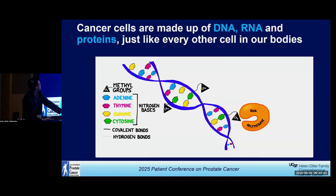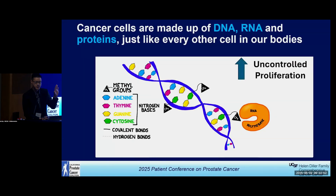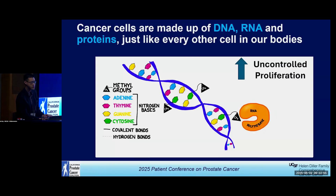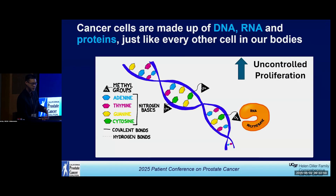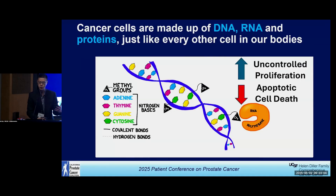You can see the full names in the left panel. There are two key hallmarks that make prostate cancer — any cancer — actually a cancer. Those are that the genetic instructions within those cells lead to either uncontrolled proliferation, meaning the cells are continuously dividing, or a decrease in apoptosis, which is another word for cell death.